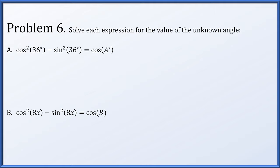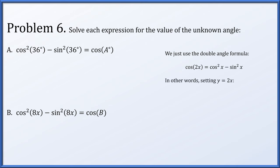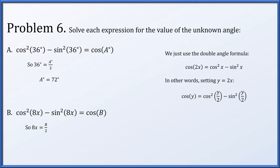In problem 6, let's solve each expression for the value of the unknown angle using the double angle formula: cos of 2x equals cos² x minus sin² x. Equivalently, cos y equals cos²(y/2) minus sin²(y/2). In the first part, setting 36 degrees as a/2, we get cos²(a/2) minus sin²(a/2) equals cos a, so a is 72 degrees. In the second part, setting 8x as b/2, we get cos²(b/2) minus sin²(b/2) equals cosine of b, which is 16x.